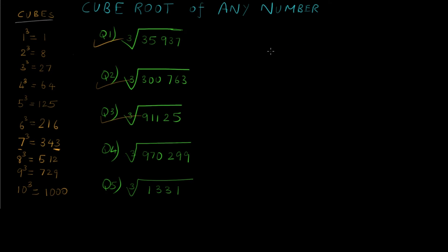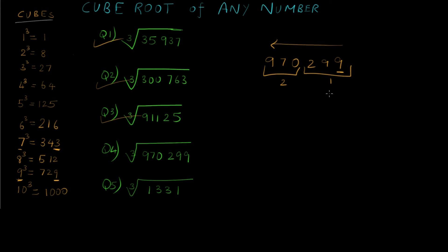Now let's solve question 4: find the cube root of 970299. I write the number and make groups of 3 from right to left — group 1 is 299 and group 2 is 970. For the first group, the units place is 9, and the cube with units digit 9 is 729, which is 9 cubed. So the first digit is 9. For the second group, the cube closest to and less than 970 is also 729, which is 9 cubed. So the second digit is also 9, giving the answer 99. Indeed, 99 cubed equals 970299.